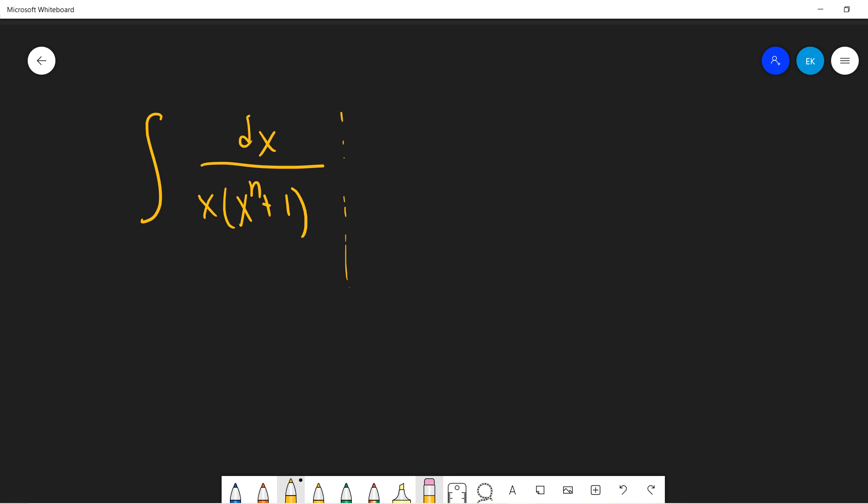Okay, so this integration is not easy. dx divided by x, x to the n plus 1. Okay, so the simple idea is that you use the substitution, right? So you need to make the difficult function as your substitution. So the intuition is that you let x to the n be t.